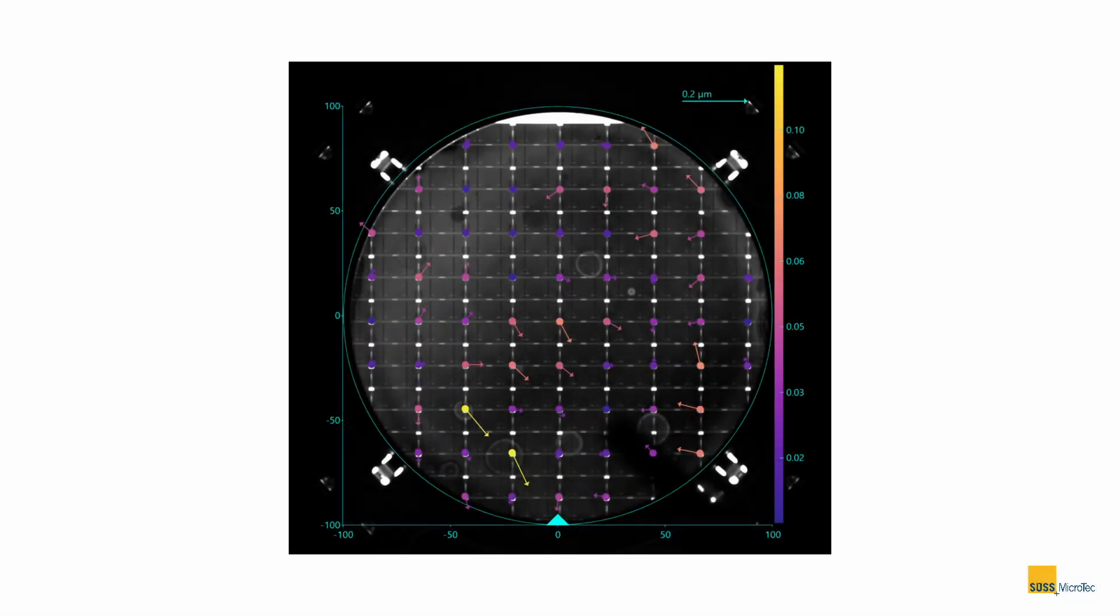A superimposed position of the overlay and void measurements can be used to visualize correlations between the overlay vectors and defects in the bond interface for optimum process control.